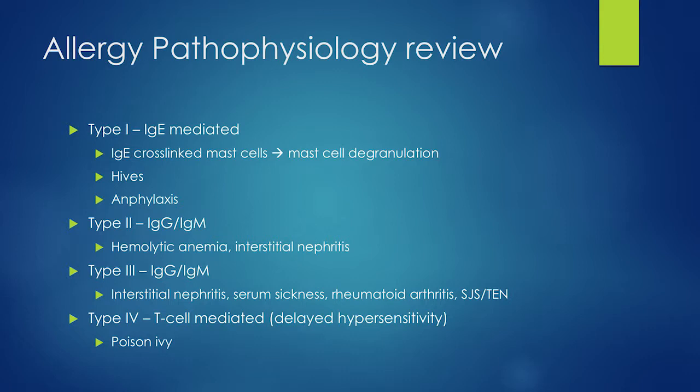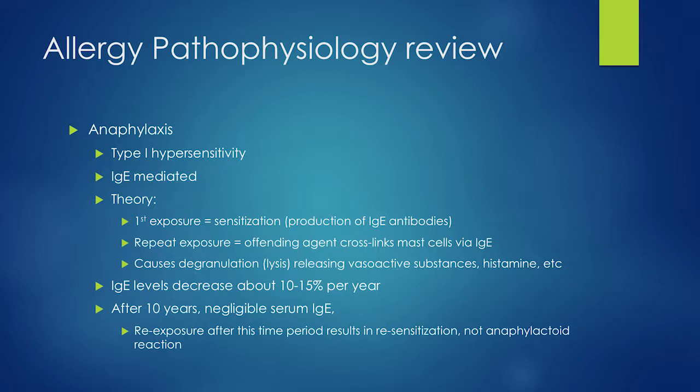A quick allergy pathophysiology review: Type 1 is IgE-mediated — antibody-mediated reactions. Type 2 can be IgG or IgM. Type 3 is similar. Type 4 is delayed T-cell mediated. Type 1 anaphylaxis is what we worry about most because it is relatively common and can be life-threatening. Anaphylaxis is a Type 1 hypersensitivity, IgE-mediated.